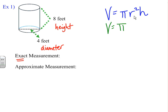And then we want to find the radius. Well, here the diameter is four feet. So in order to find the radius, the radius is equal to half of the diameter. So if I take four and divide it by two, I'll get two.